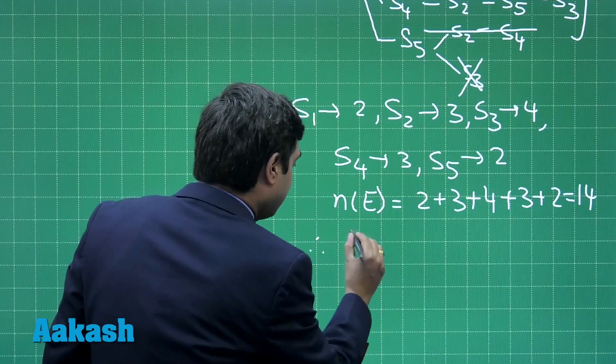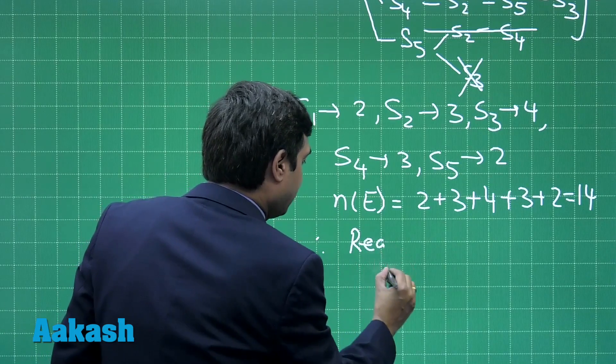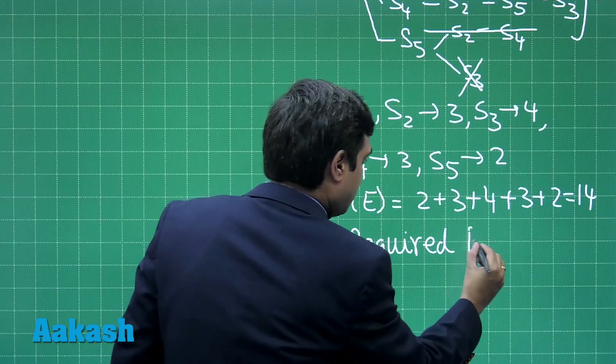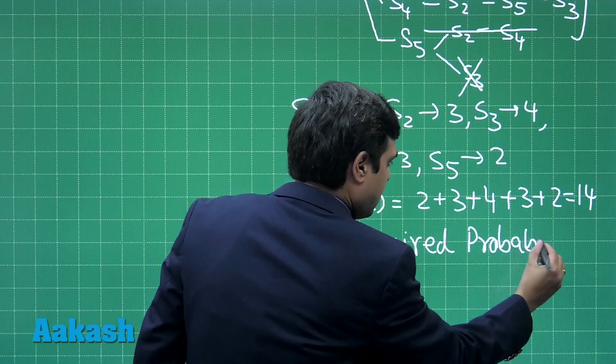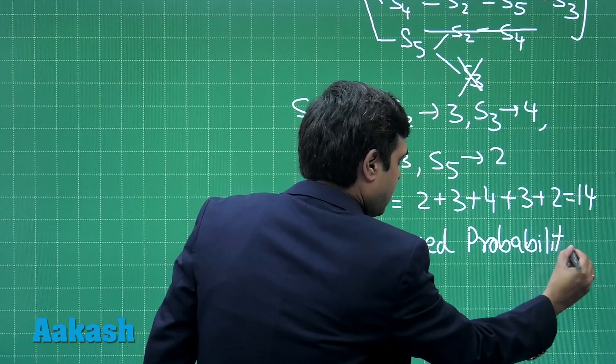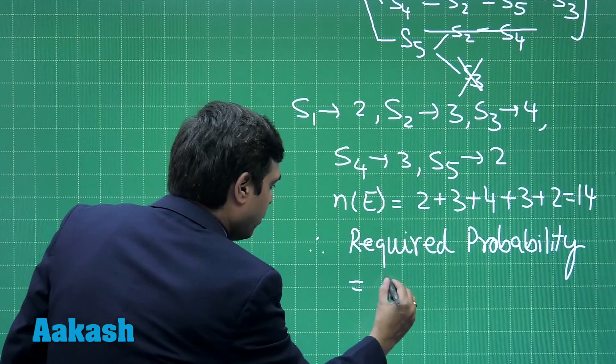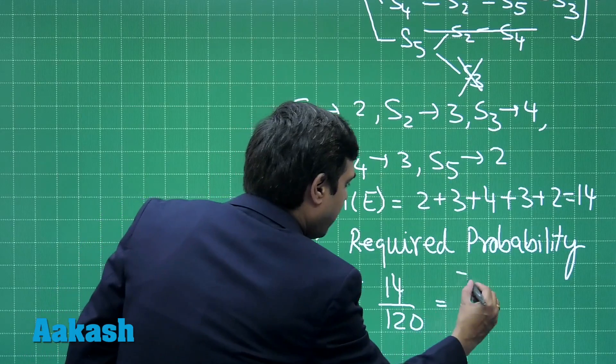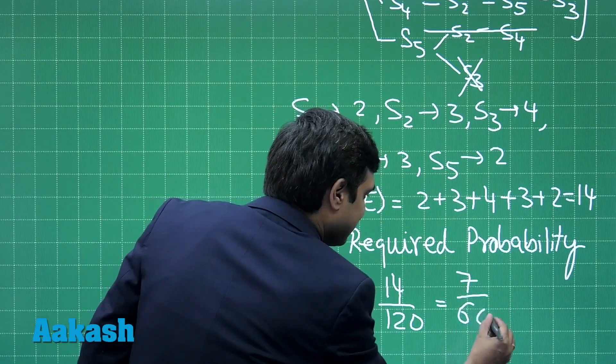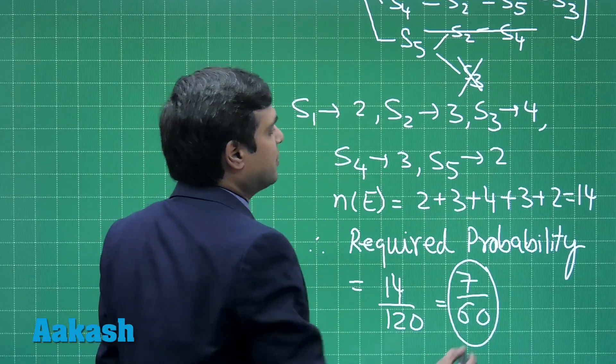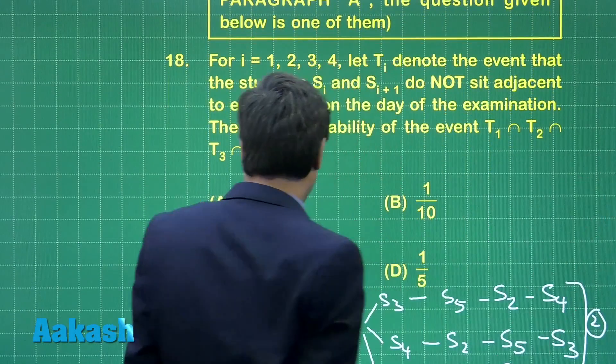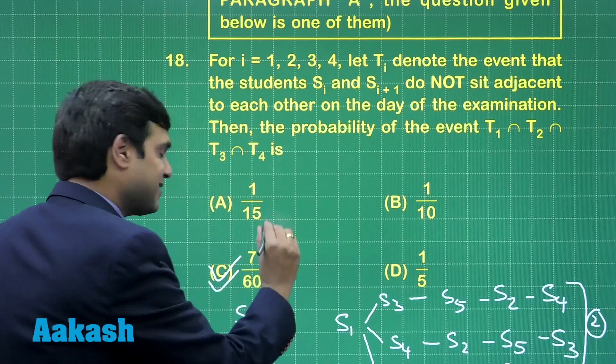Hence, we get the required probability is equal to 14 by 120 or 7 upon 60. So let us look at the given options of the question. We see that option C is the correct one. So just mark it as the correct answer, option C.